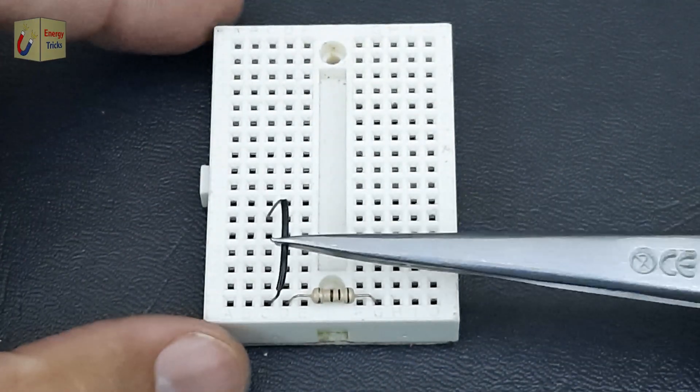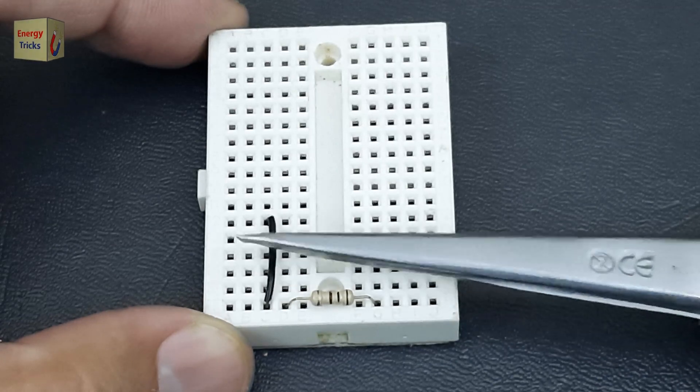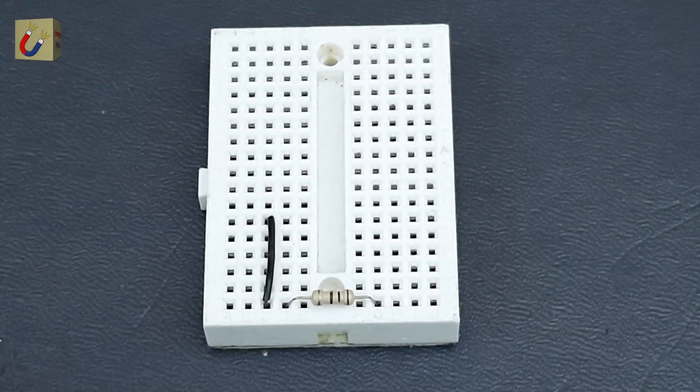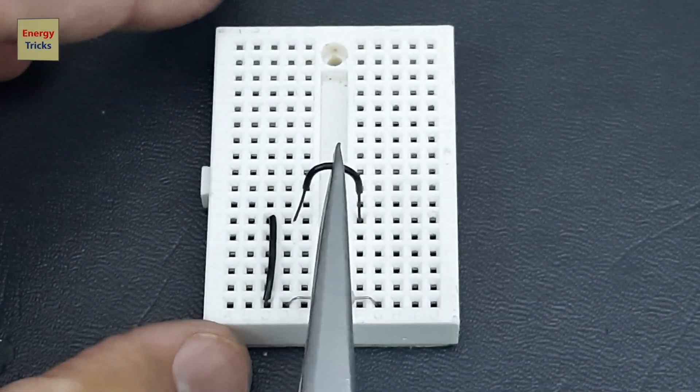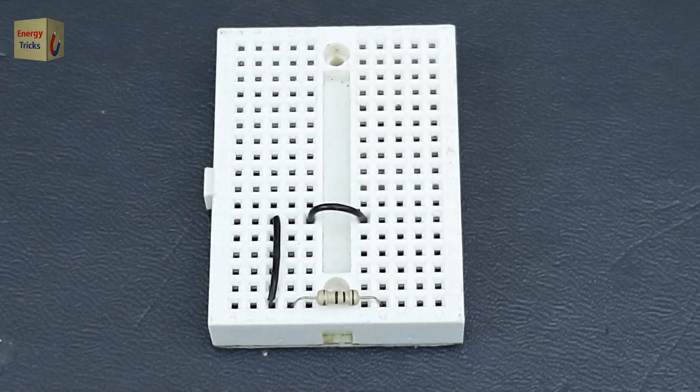Next, insert two jumper wires into the breadboard. Connect one leg of the resistor to the negative terminal of the 3.7-volt battery we will use in this project using these two jumper wires.